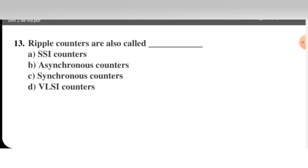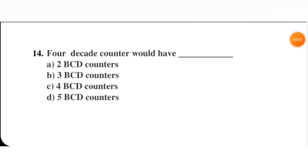Next question: ripple counters are also called — SSI counter, asynchronous counter, synchronous counter, or VLSI counter. The right option is asynchronous counter, because in a ripple counter the clock is not the same for all flip-flops. Remember: in a ripple counter, clock pulses for all flip-flops are different. B is the right option.